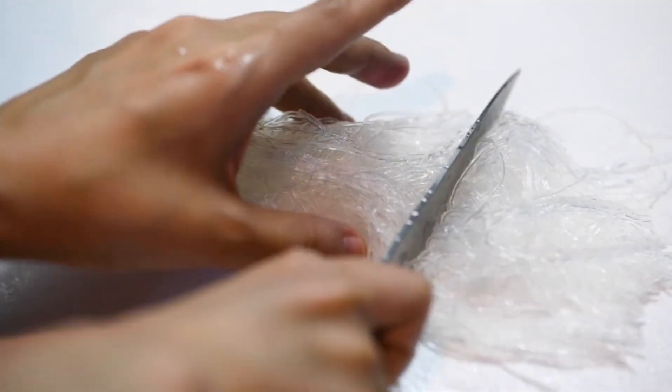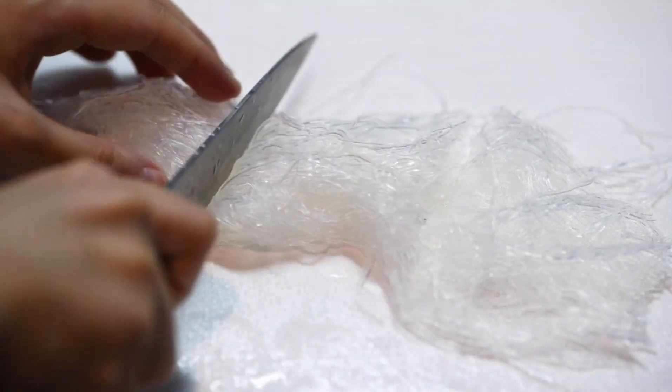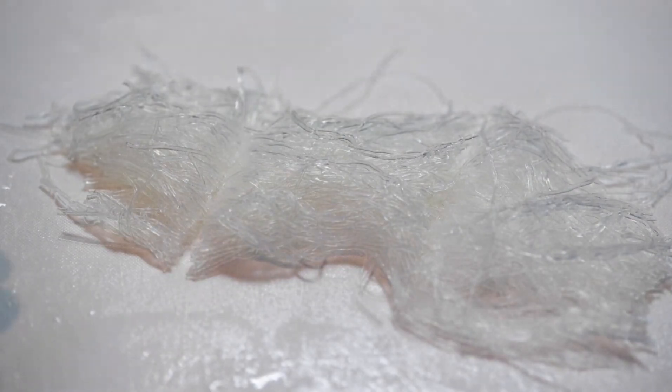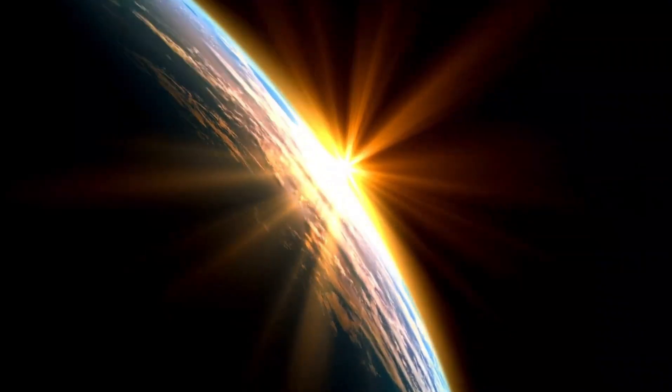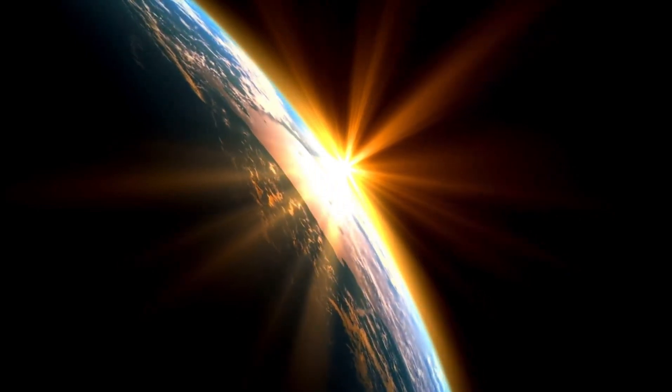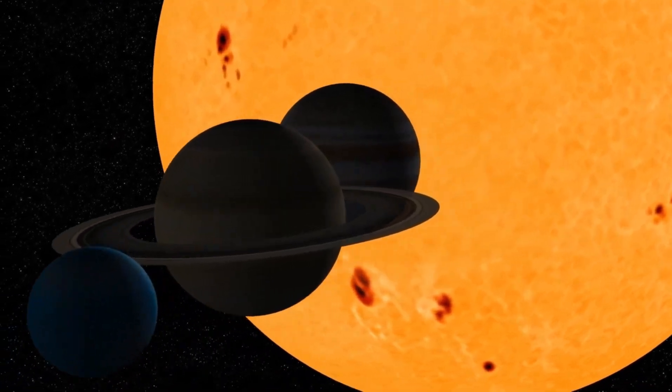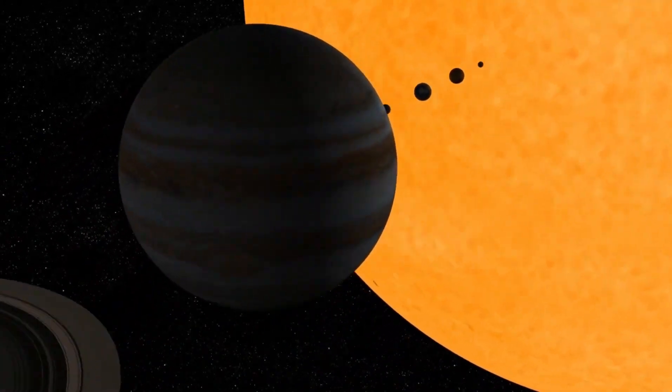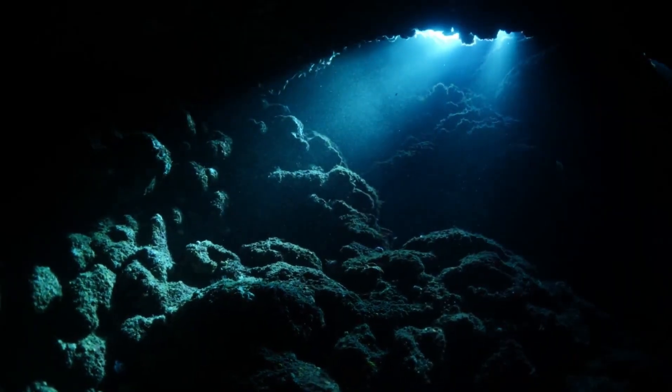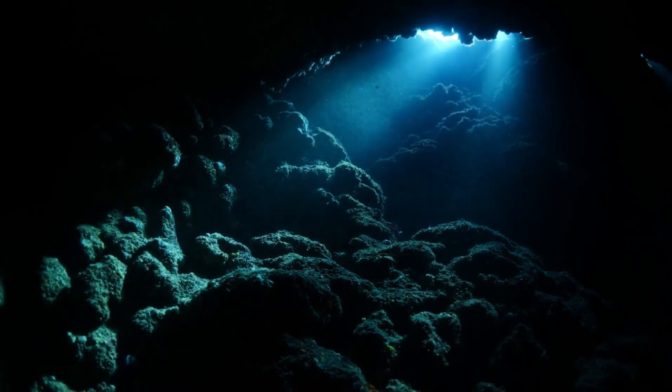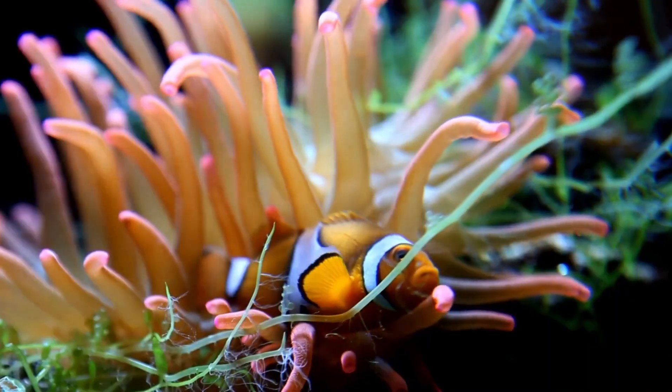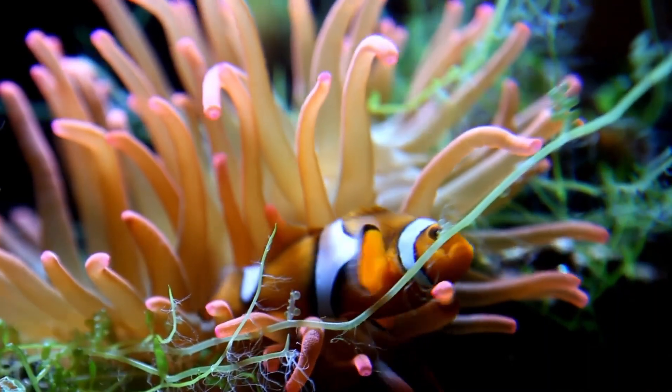These discoveries aren't just interesting, they're game-changing. For years, we believed life had to depend on the warmth of the sun. After all, here on Earth, the sun fuels everything. But what if life could survive without sunlight? What if it could thrive in places so distant and cold that the sun is just a faint dot in the sky? This idea isn't as far-fetched as it sounds. On Earth, in the deepest part of the ocean, there are entire ecosystems living in complete darkness. These environments are far from the sun, yet life not only survives, it flourishes. And this is exactly the kind of environment that Pluto may offer beneath its icy surface.